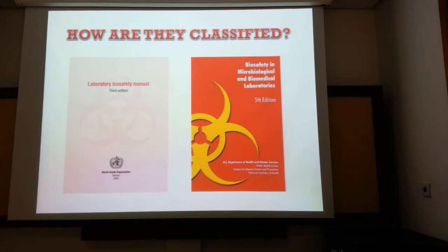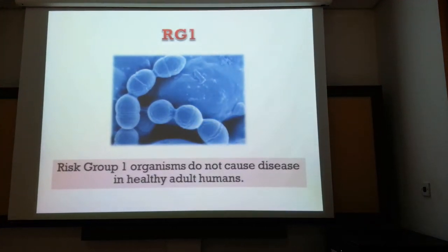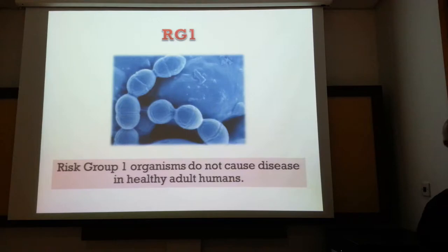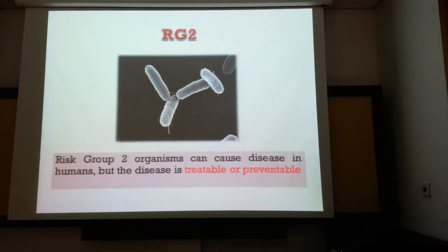Biological agents are classified according to their risk group. Risk Group 1 agents do not cause diseases in healthy adult humans — Lactobacillus lactis is a perfect example; it's a probiotic and causes no harm. Risk Group 2 agents cause disease in humans, but the disease is treatable or preventable, and treatment protocols are well defined.